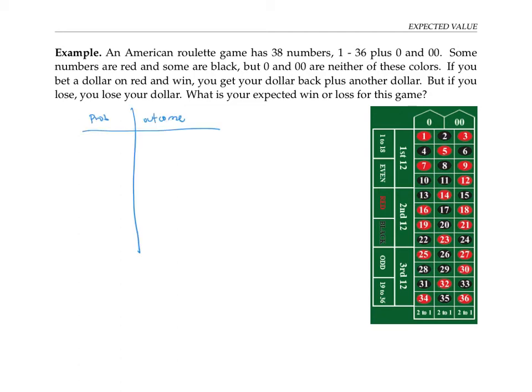So let's figure out the expected win or loss for this game by charting out the probabilities and outcomes. So first of all, there's some chance that red comes up. Since half of the 36 numbers are red, so that's 18 red numbers, but there are 38 numbers all together because of the zero and double zero, then red will come up, on average, about 18 out of 38 times. So that's the probability of getting red. If that happens, you get your dollar back plus another dollar. So your net is that you've won $1.